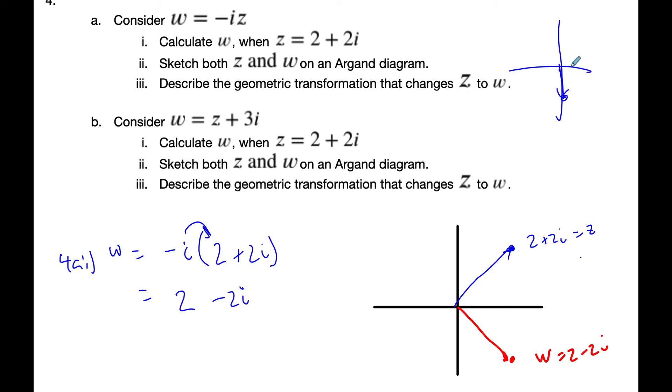Negative i all by itself is right here. This is negative i. And so I could consider a clockwise rotation of 90 degrees or a counterclockwise rotation of 270. So if I go from here, and if I rotate around 270, I get here.